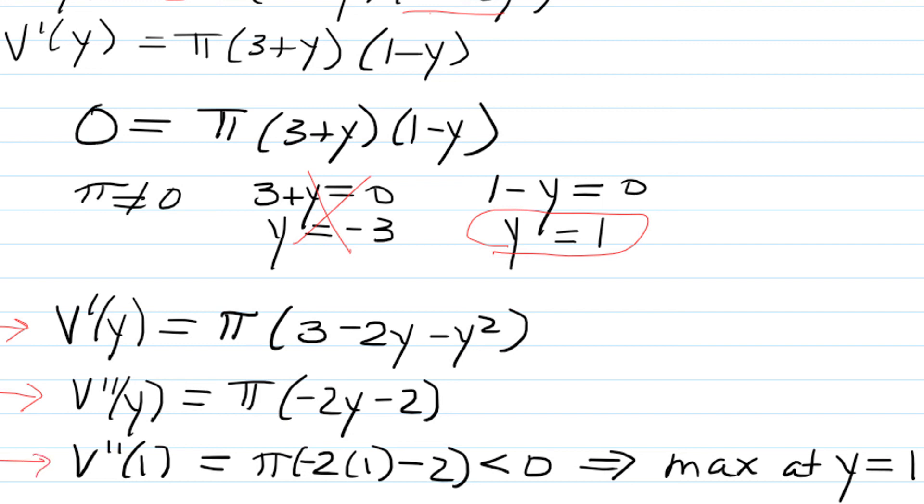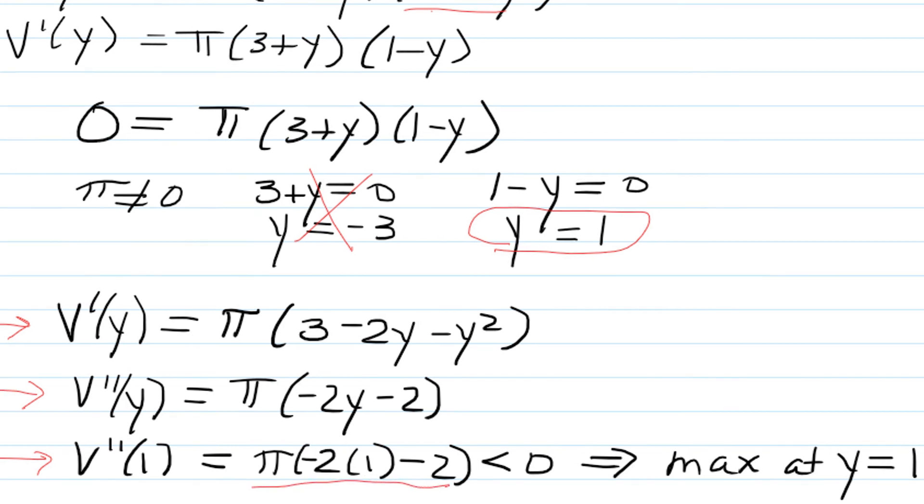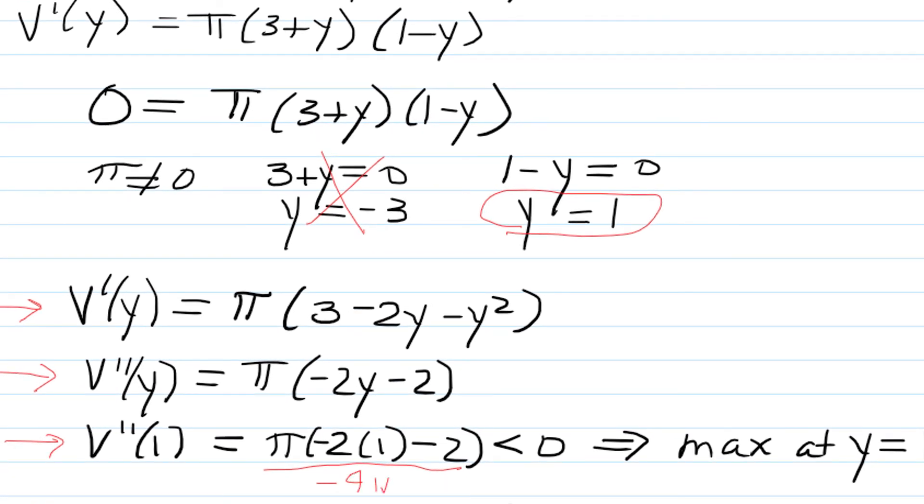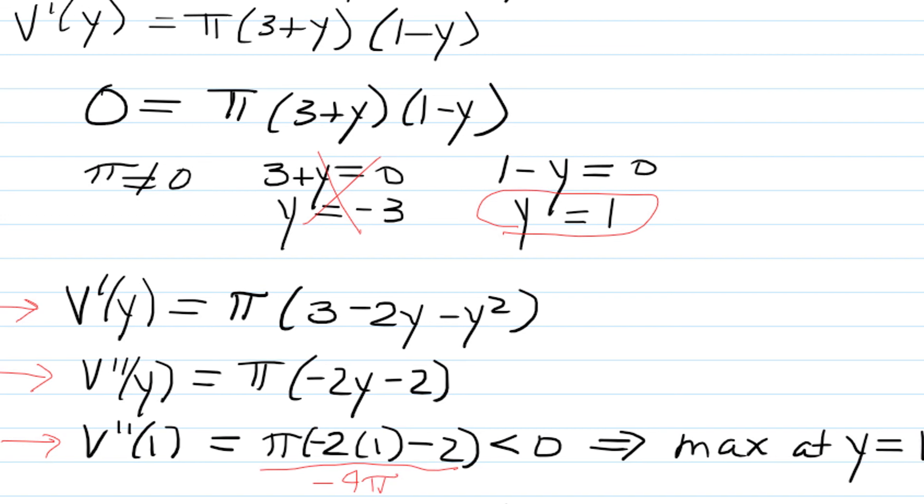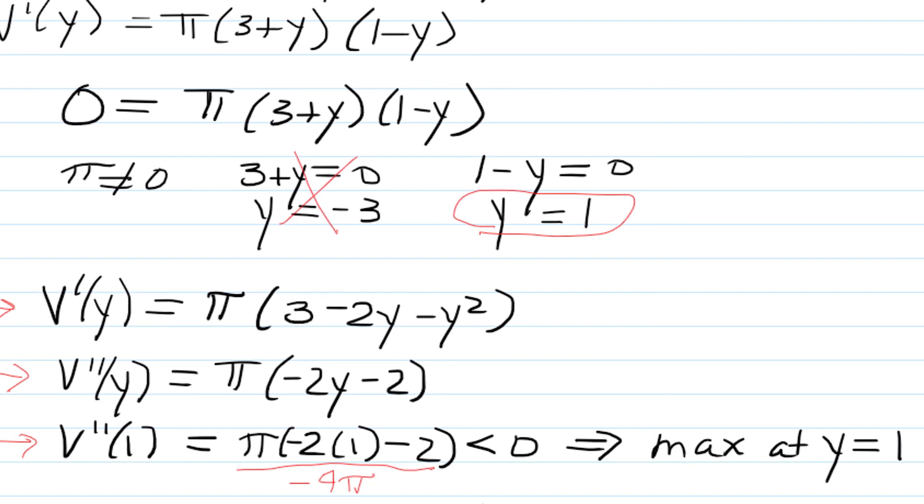And I'm going to plug in y=1 to confirm that we get a max. How do we know? Well, if we plug it in and get a negative, we have a max, and that's exactly what happens. We get -4π, which is less than zero, so we have a max at y=1.